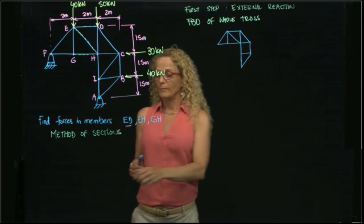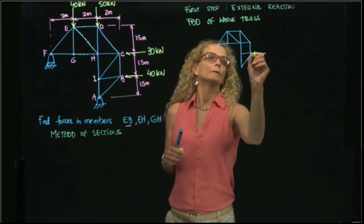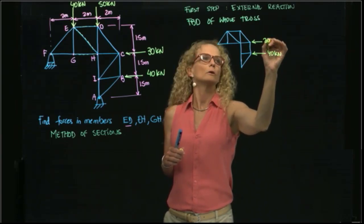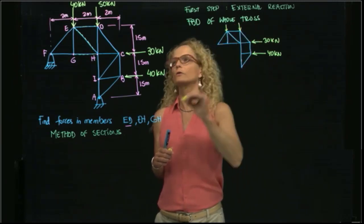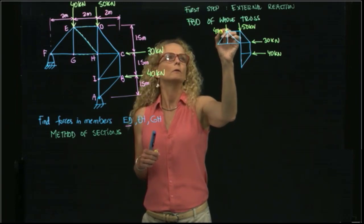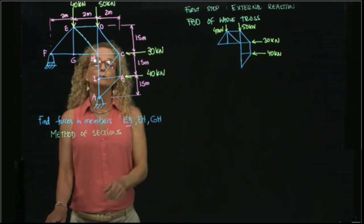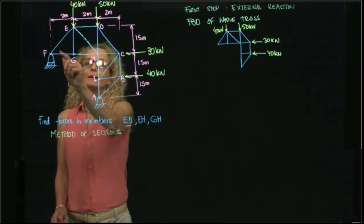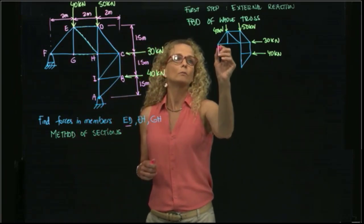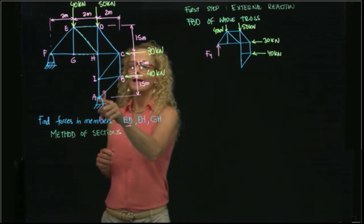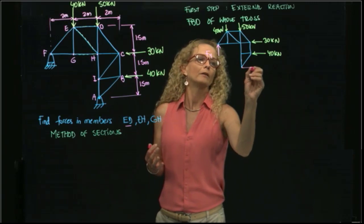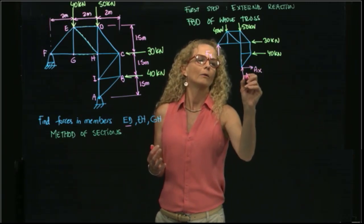I have my external forces applied, which are 40 kilonewtons and 30 kilonewtons, and two other forces: 50 kilonewtons and 40 kilonewtons. Then I have the reactions at my external supports. F only restricts motion in the Y direction, so we have only one reaction, Fy. A has two reactions, AX and AY, because it restricts two displacements.